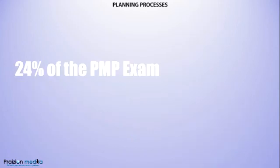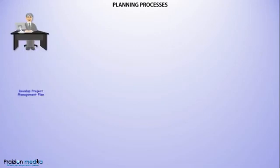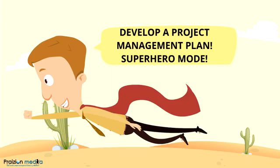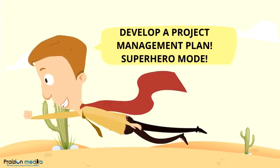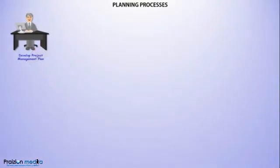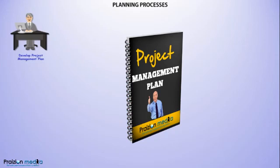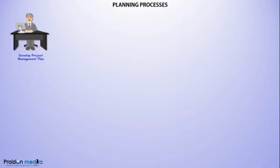The next process group is the planning process group. There are 24 processes here and this is 24% of your exam. The first process is Develop Project Management Plan, where the project management plan is put together. This process integrates everything else that happens after it, and also creates direction and focus for how subsidiary plans will be developed — their look, their feel, and so on.